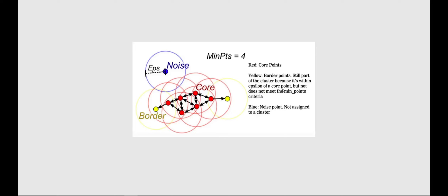A border point is like reaching the end of a street where one or two remaining houses are still considered neighbors — those are the border points. Border points are considered part of the cluster. Core points and border points together form our clusters iteratively. A noise point is one that is not assigned to any cluster — if a point is neither a core point nor a border point, it is classified as a noise or outlier point.